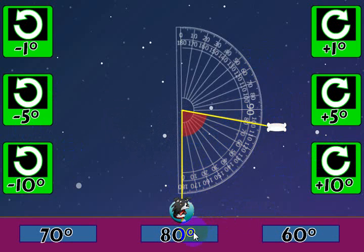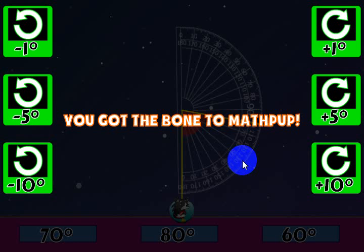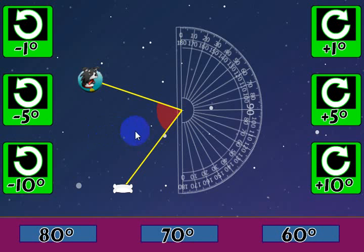Let's go ahead and click 80, and you'll see it go down. I'm not sure it's correct. Okay, now that we see it go straight to them, to MathPup, we know that we've got the right angle. It says you've got the right angle.